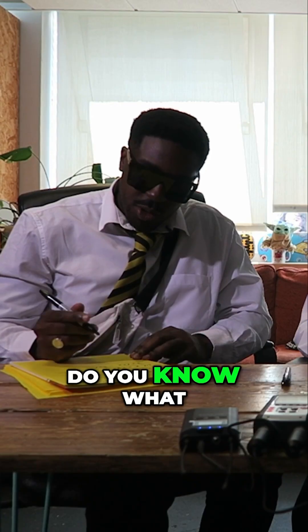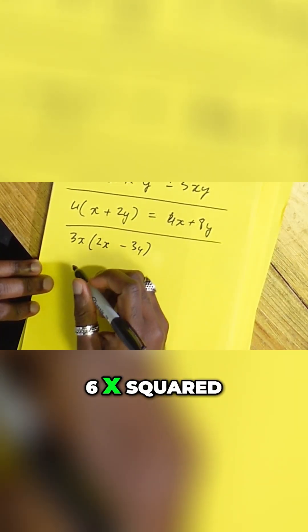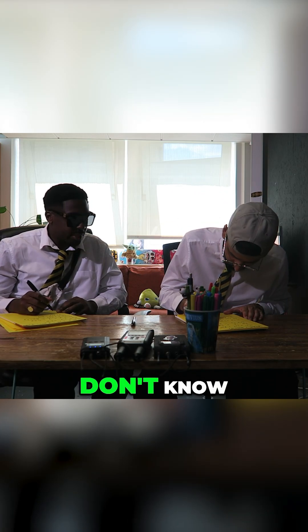Nah, it's already messed up. Do you know what? I'm just gonna guess. 3x. 6x squared. Don't know. Don't know. Mine's dead.